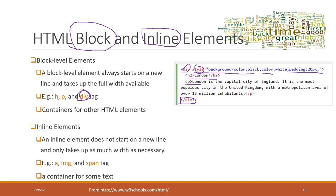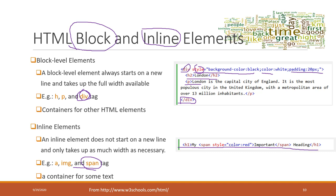The inline elements mean that we can control the items within another element. For example, the span tag is the one that's mostly used to change attributes within a tag. Here we have an H1 tag and we want to just change the color of one word to be red. So instead of changing the entire heading, we can use a span tag. Within this span tag, we can change the style of the color to be red. And then when we display the style, we'll see that only that word will be red.